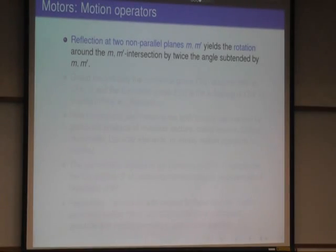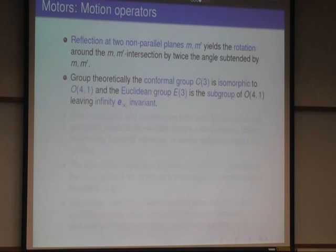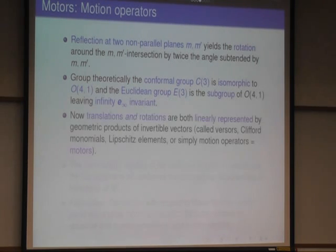And so, again, you can apply rotations as before, and you get a rotation around the line of intersection of two planes. And you just generate the conformal group, and it's isomorphic to O(4,1), the conformal group of three dimensional space. It has the Euclidean group as a subgroup, which leaves the infinity invariant.